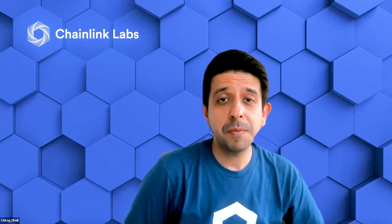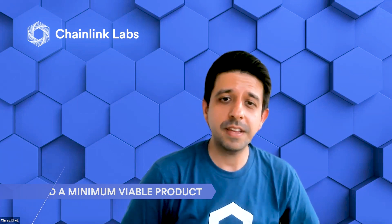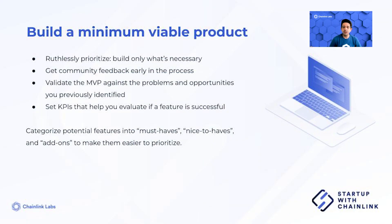Now it's time to build your Minimum Viable Product, or MVP. An MVP helps you ruthlessly prioritize and build the most necessary features first. Question every new feature request and build only what's necessary. Keep in mind the 80-20 rule: 80% of outputs or impact will come from 20% of inputs or effort. Once your MVP is ready, get it quickly into the hands of your users. Gather as much feedback as possible, and consider building in analytics to track usage from the start.